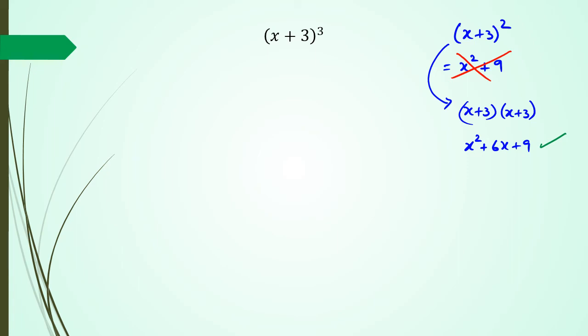Alright, so same rules apply here with a cubic. Don't go away and actually write this as x cubed plus 3 cubed, which is 27. Because if you do that, you are incorrect.